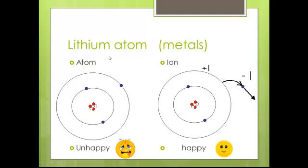We're going to use the lithium atom to represent the metals. This is an atom of lithium, and it's unhappy. Why is it unhappy? Well, its first shell has the two, but its second shell has one, and that's a long ways from eight.